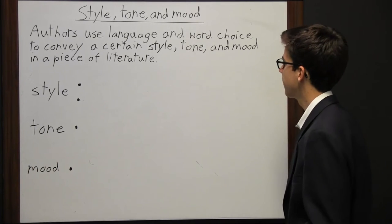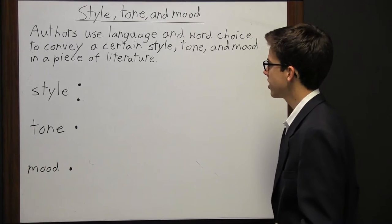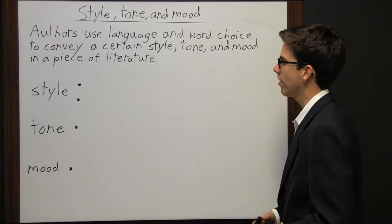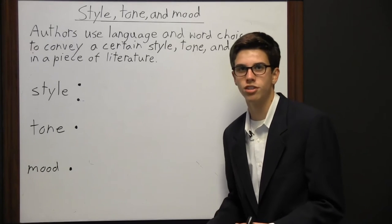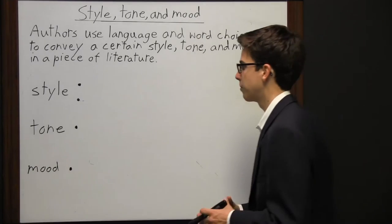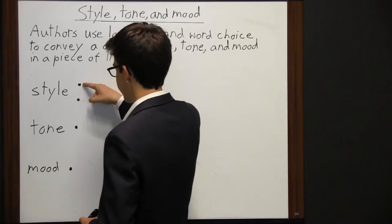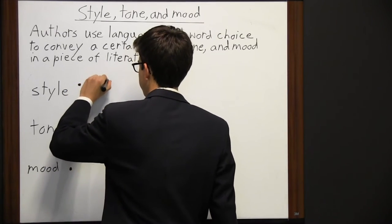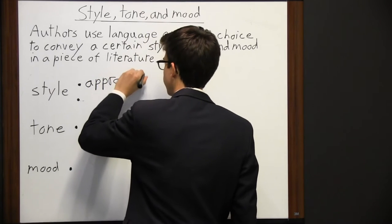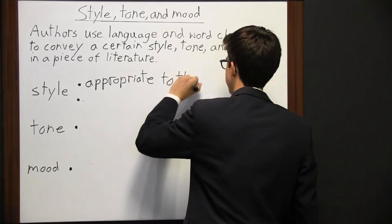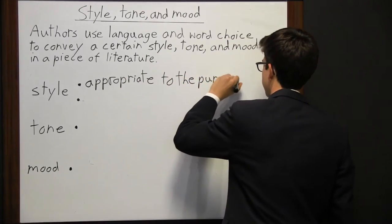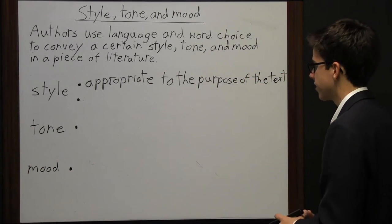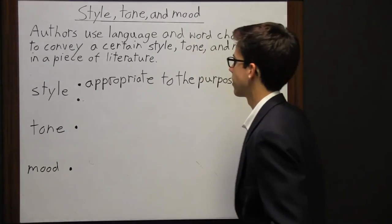Authors use language and word choice to convey a certain style, tone, and mood in a piece of literature. Style, tone, and mood are all different but somewhat similar — they have to do with the way the author writes, the words they use, and the way they grammatically structure their pieces of writing. So first we're going to take a look at style, which has two purposes. One purpose of style is to be appropriate to the purpose of the text.